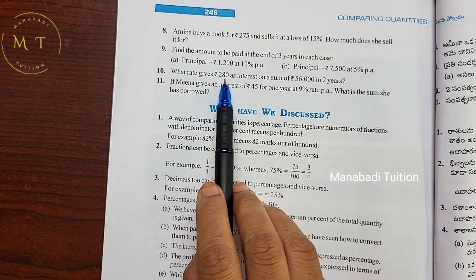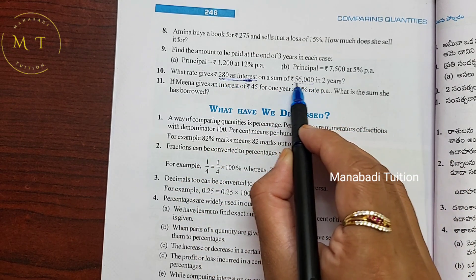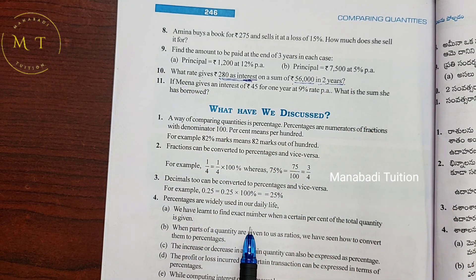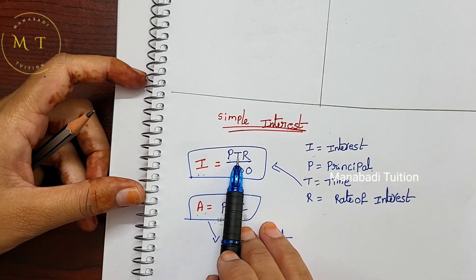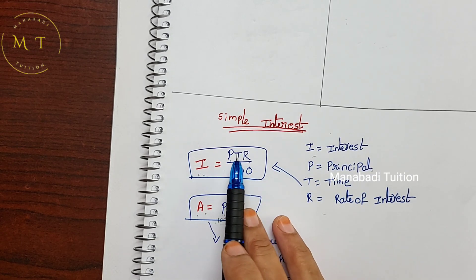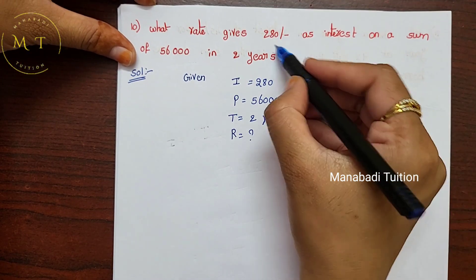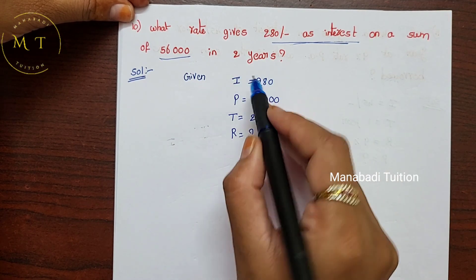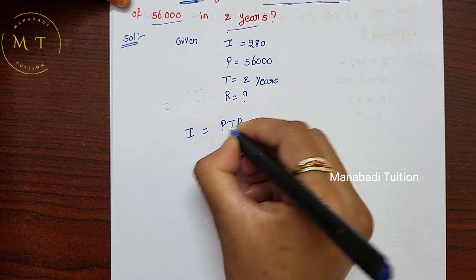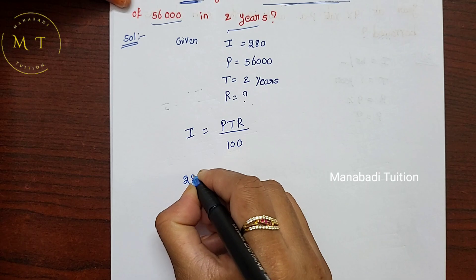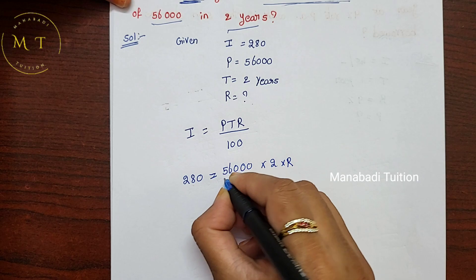Question 10: What rate gives 280 as interest? Given: interest I = 280, principal = 56,000, time = 2 years, find rate R. Using I = PTR divided by 100: 280 = 560 into 2 into R, which gives 1120R = 280.